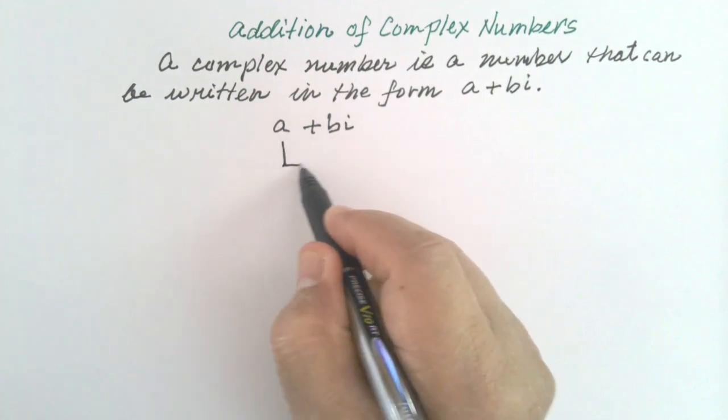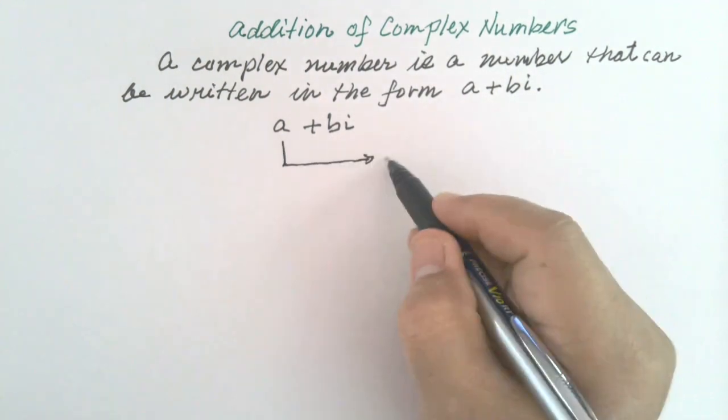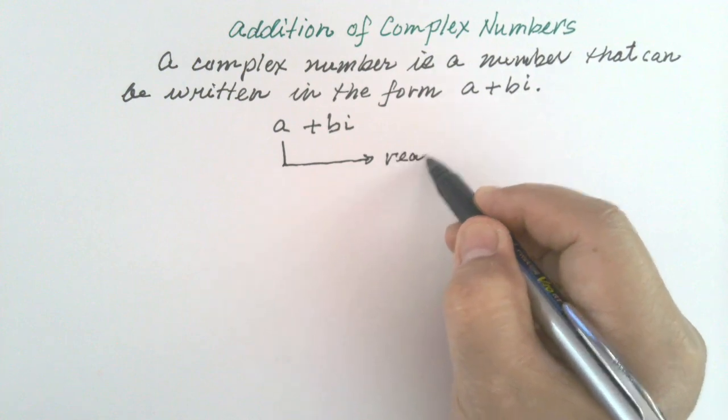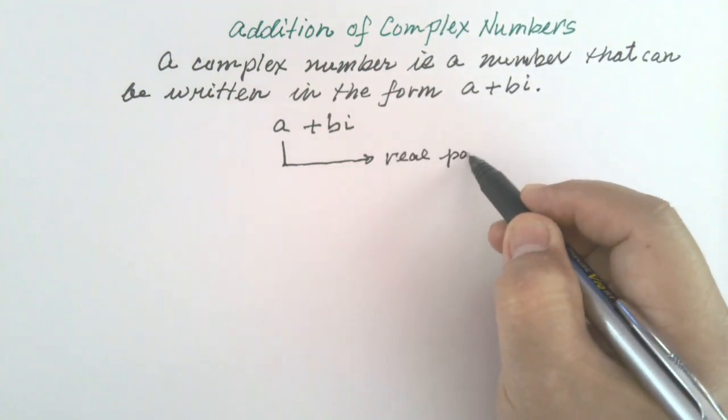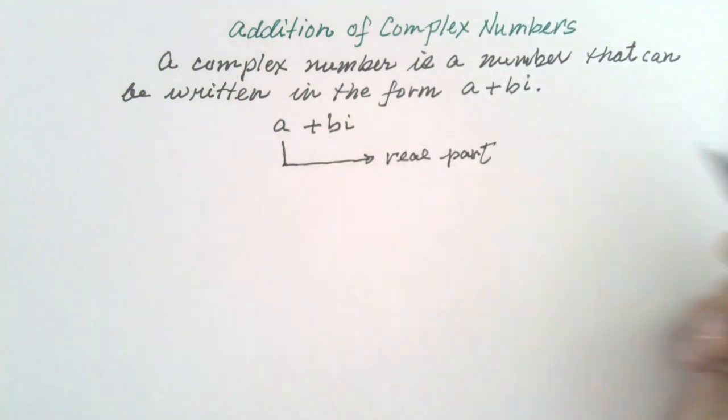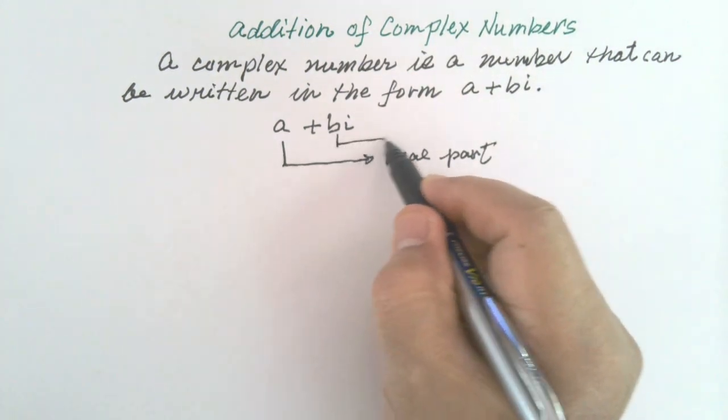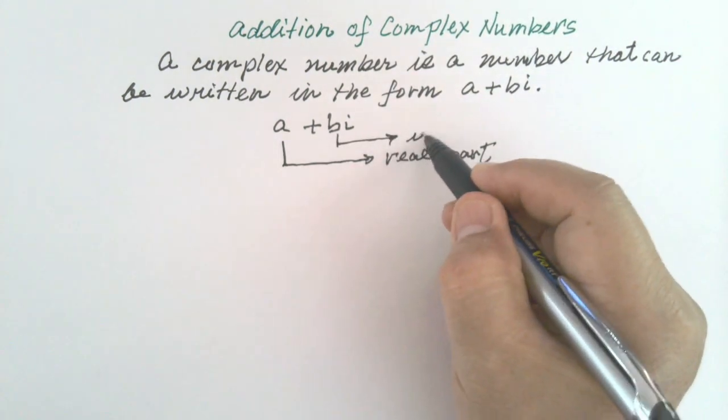A is the real part. BI is the imaginary part.